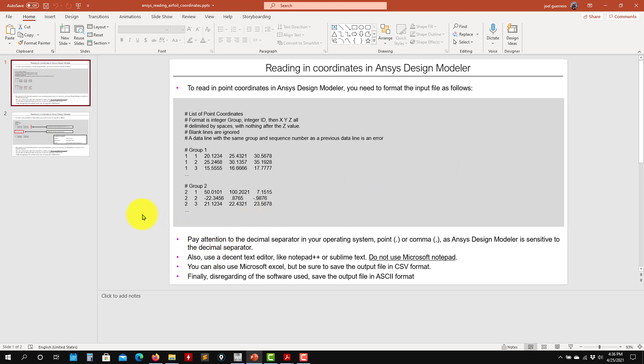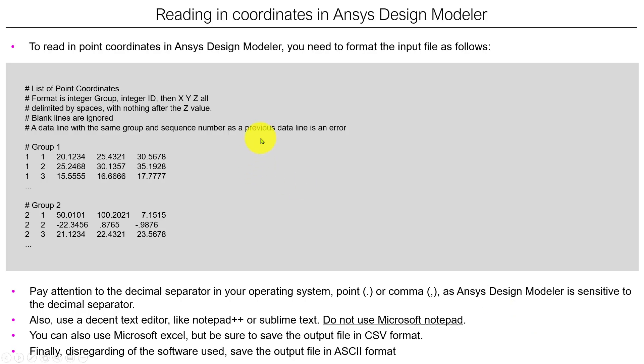We're going to use the two geometry tools that we're using with ANSYS Workbench: Design Modeler and SpaceClaim. We're going to see how to read in the geometry. The files that you are going to use need to be in a very specific format.